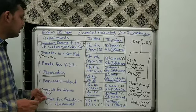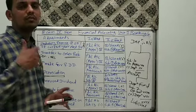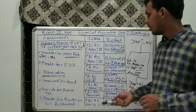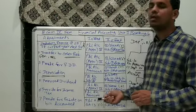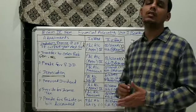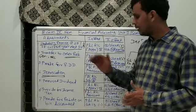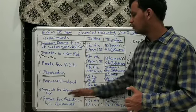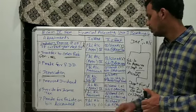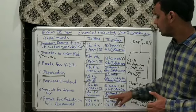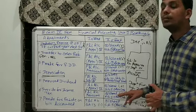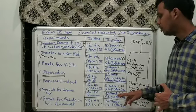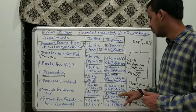Next is provision for income tax. Income tax is a provision, so in the P&L account it goes into the expenses section under provisions and contingencies — the third part of P&L expenditure. The second entry in the balance sheet goes into Schedule 5 — other liabilities — where we add the provision for income tax.